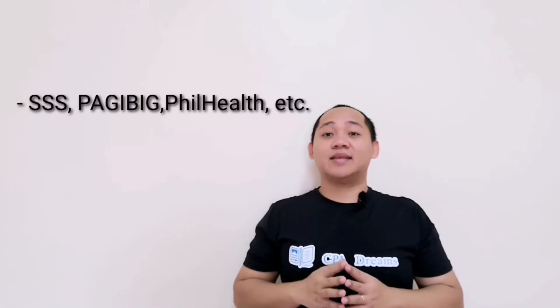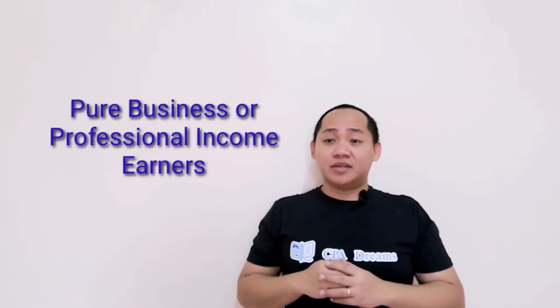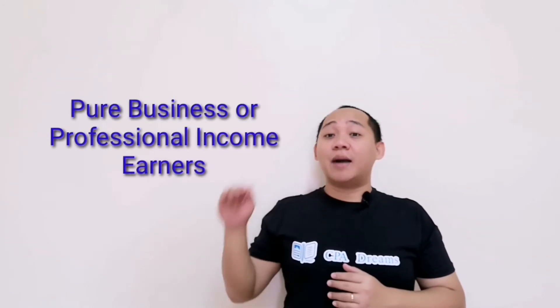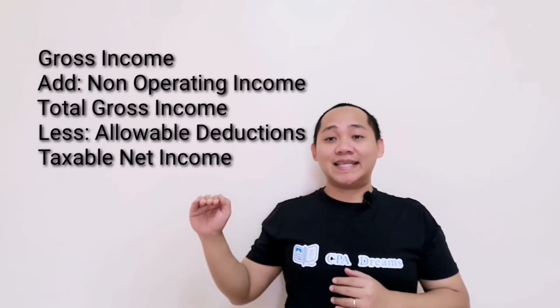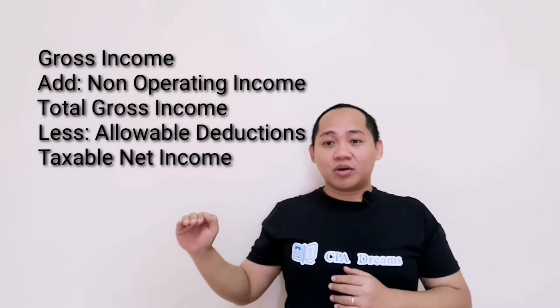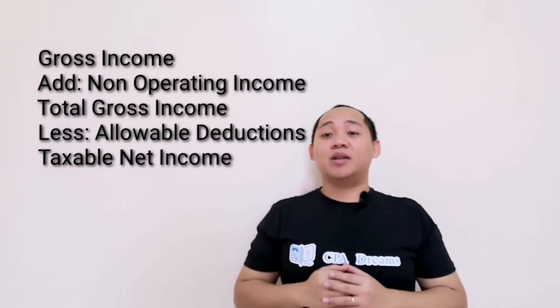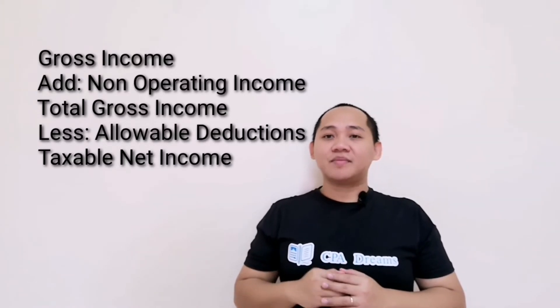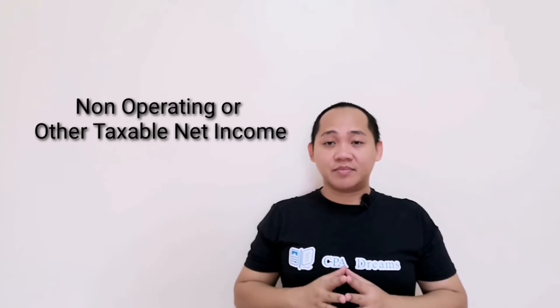For a business or professional income earner, you have gross income from business or profession, then add non-operating income, you will get total gross income, which gives you taxable income. Here I mentioned non-operating income because there might be other income that is not part of the gross income from business, so that could be your passive income which is subject to regular income tax.